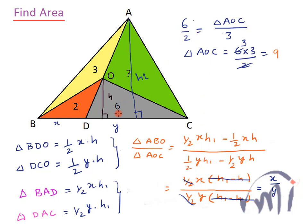That is why I directly compared 6:2 to the area of triangle AOC:3, and within a few seconds got the answer as 9. The first step to any shortcut is knowing your concepts properly. For many more concepts and interesting videos, keep watching MathSmart, subscribe, and don't forget to press the notification bell.